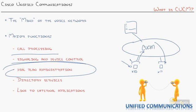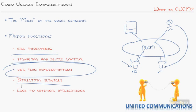CUCM also offers, natively in itself, directory services. That allows you to create user accounts. User accounts allow users to be associated with devices so they can log into a web page and control their device — primarily things like call forwarding, how the voicemail light works, how many times the phone rings before it goes to voicemail. Some of those basic functions can be controlled by the users. That's known as directory services. Those user accounts can be used for a lot more as well, but that's the core of it. You can also start linking Call Manager to outside applications.